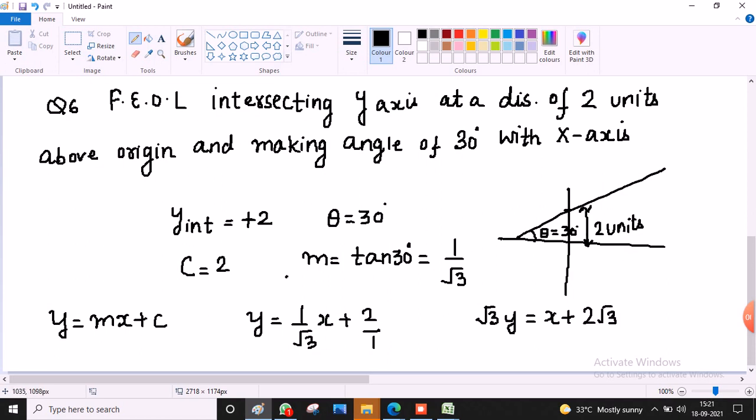So 2 root 3 is equal to, so minus 2 root 3 is equal to x minus root 3y. So this is the equation of required line.